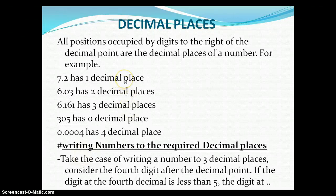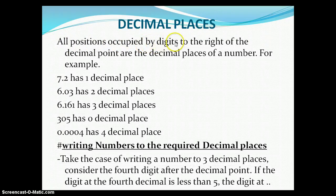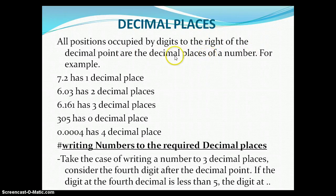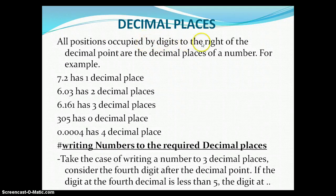Last time we ended on the concept of significant figures. Today we are proceeding with this last part of our topic, which is decimal places. We say that all positions occupied by digits to the right of the decimal point are the decimal places of a number. Digits means those numbers from zero to nine. Those positions occupied by digits after the decimal point, we call them decimal places.